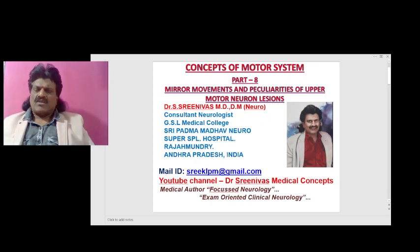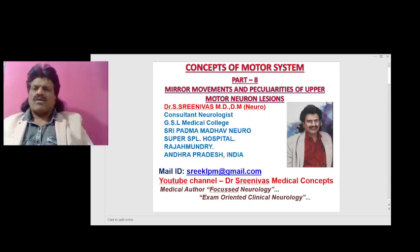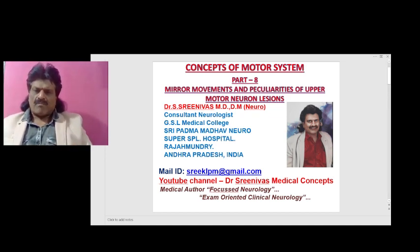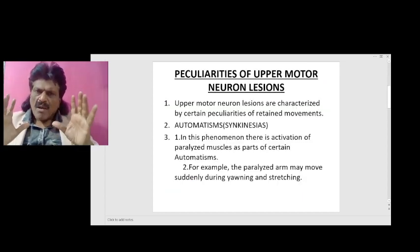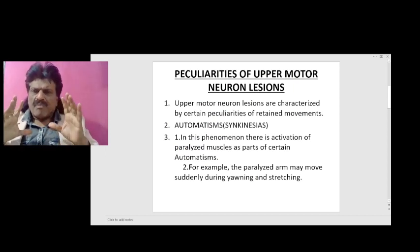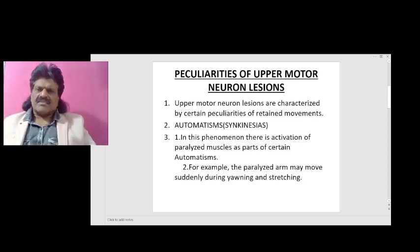The topic is mirror movements and peculiarities of the upper motor neurons — concepts of motor system, part 8. Peculiarities of upper motor neuron lesions: upper motor neuron lesions are characterized by certain peculiarities of retained movements.